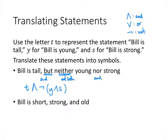In the second bullet, 'Bill is short, strong, and old,' we use English shorthand instead of formal AND connectives. Short is the opposite of tall, so that's NOT T. Strong is S. Old is the opposite of young, so that's NOT Y. The full formal version is 'Bill is NOT tall AND Bill is strong AND Bill is NOT young,' which gives us ¬T ∧ S ∧ ¬Y. In English we shorten that to 'Bill is short, strong, and old.'